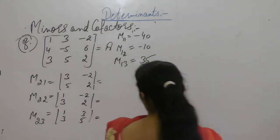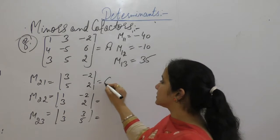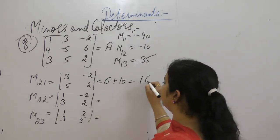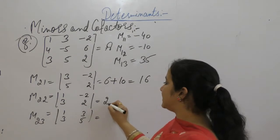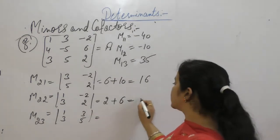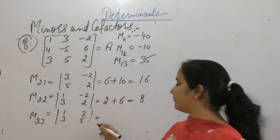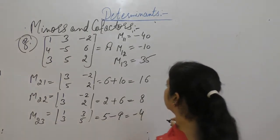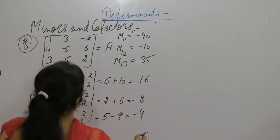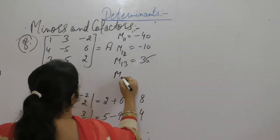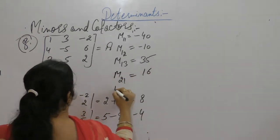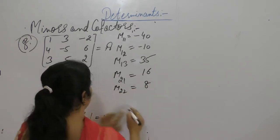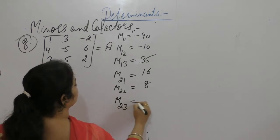Now find the values. 3 into 2 is 6, minus 5 into 2 gives 10 for M21. 2 into 2 minus 3 into 2 gives M22 value. 5 into 1 minus 3 into 3 gives minus 4 for M23. So M21 is 16, M22 is 8, M23 is minus 4.